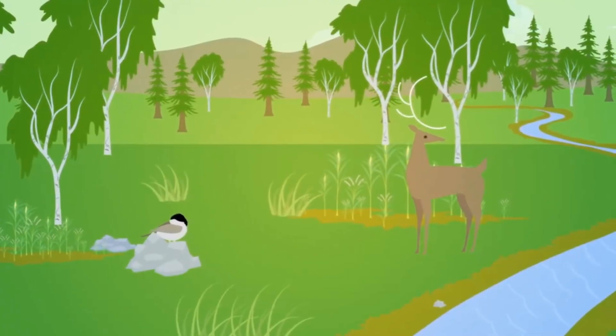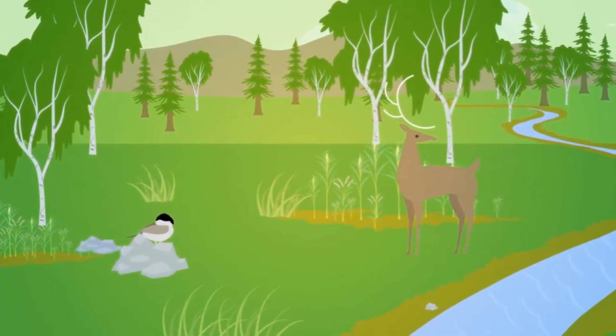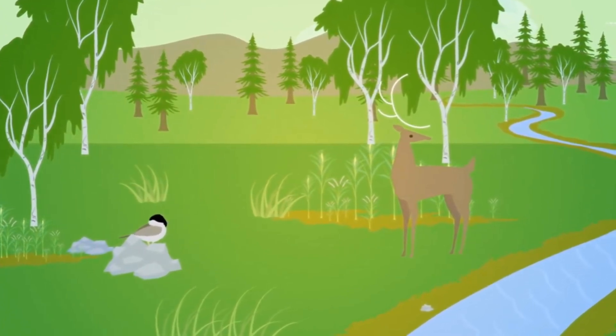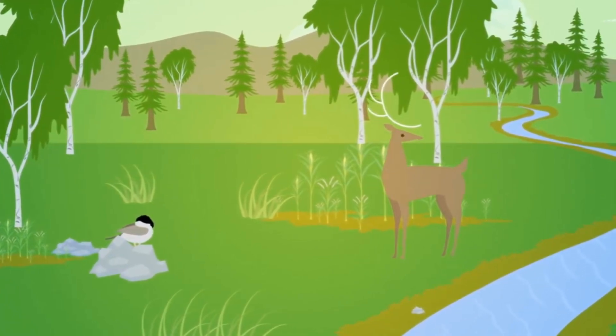Let's take a small example. In this picture, a bird is there, a deer standing on grass, a river is passing, and trees and mountains are there. Can you tell me what belongs to which sphere?